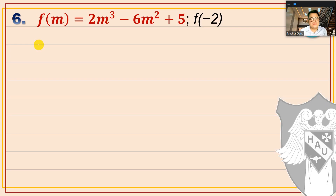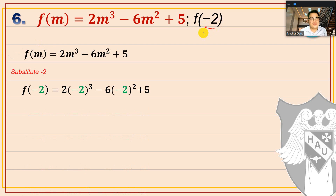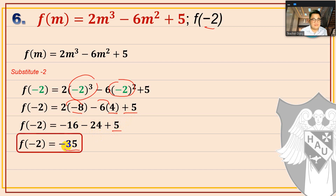Number 6: f(m) = 2m³ - 6m² + 5, with m = -2. Substitute: f(-2) = 2(-2)³ - 6(-2)² + 5. Simplify: (-2)³ = -8 and (-2)² = 4. So f(-2) = 2(-8) - 6(4) + 5 = -16 - 24 + 5 = -35.